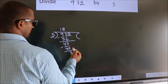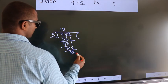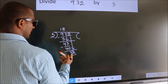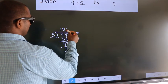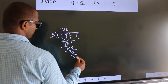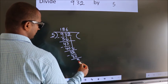After this bring down the beside number. So 2 down. So 32. A number close to 32 in 5 table is 5 six 30. Now we subtract. We get 2.